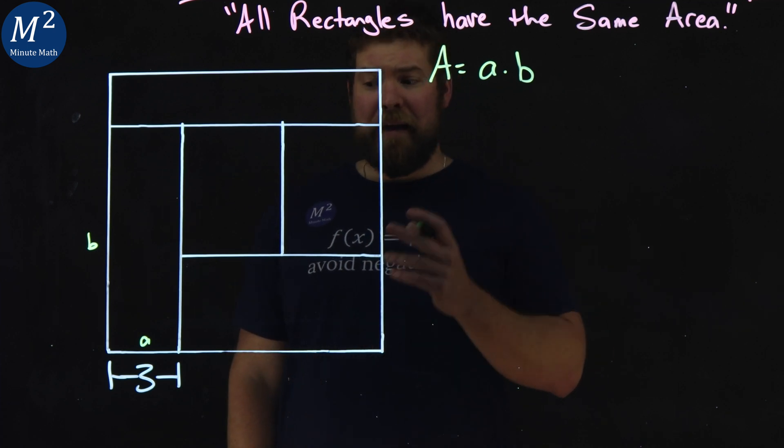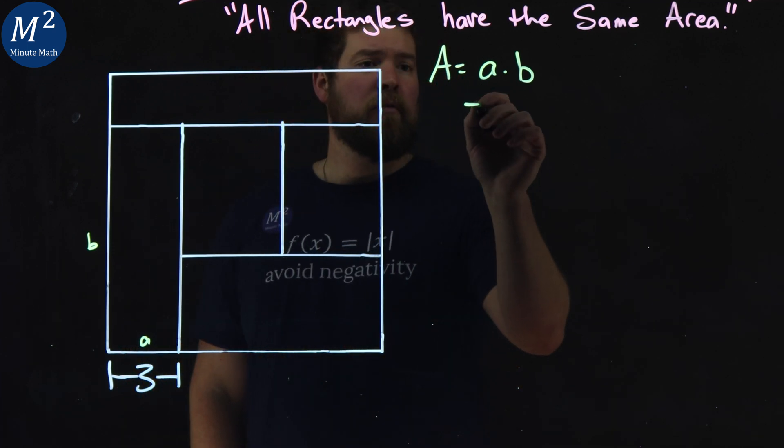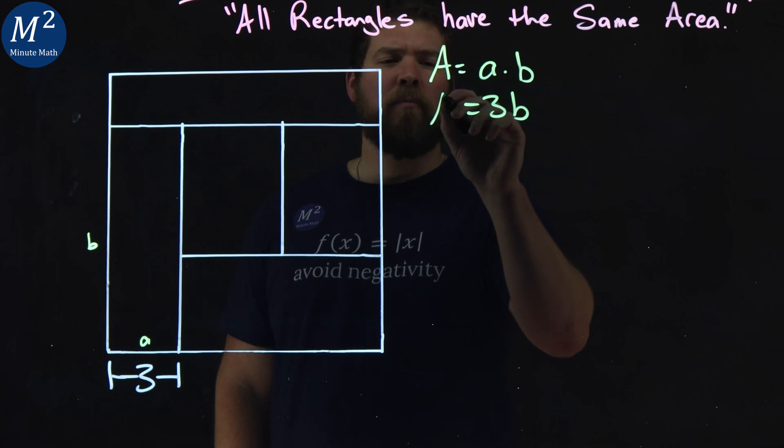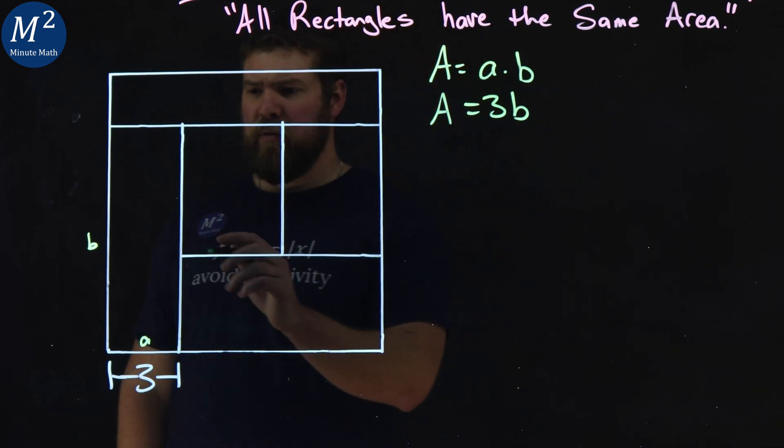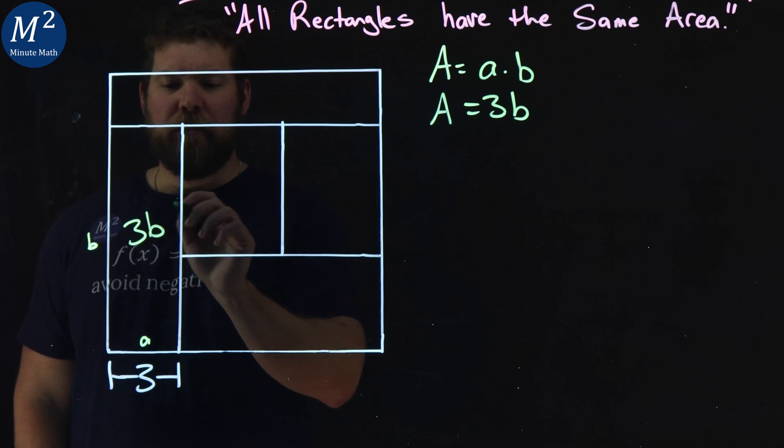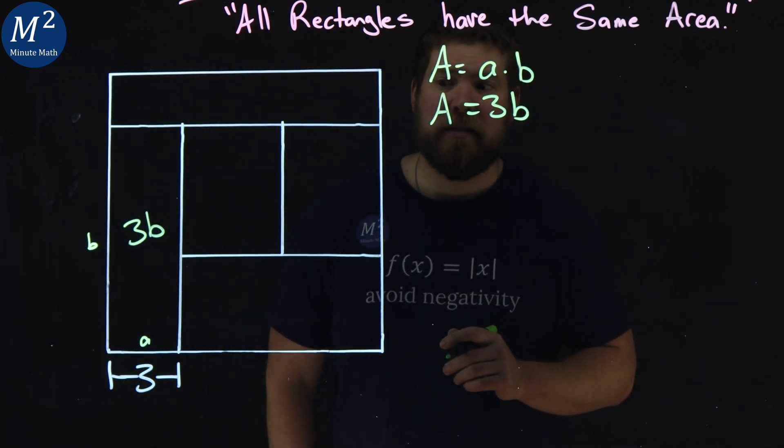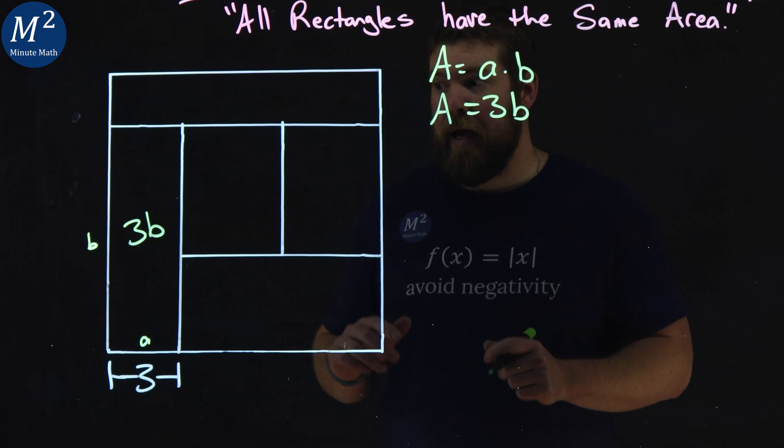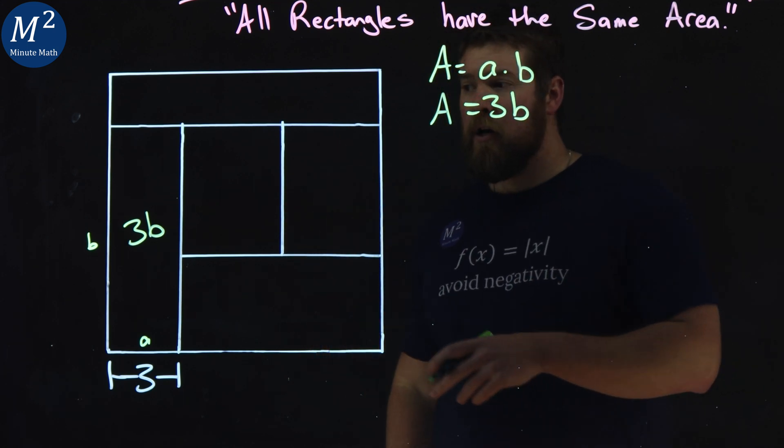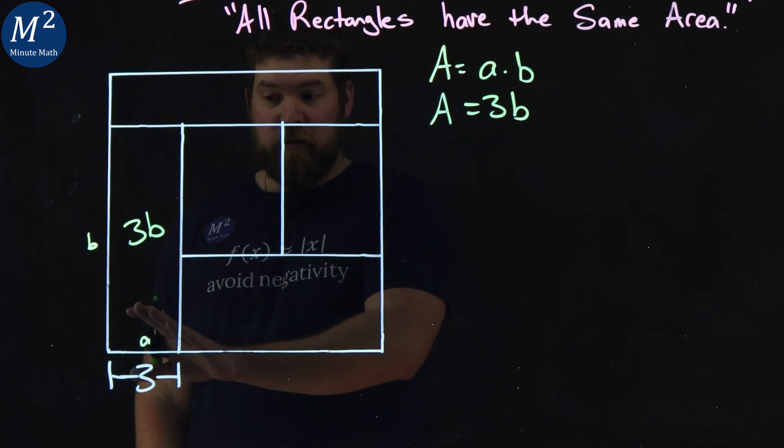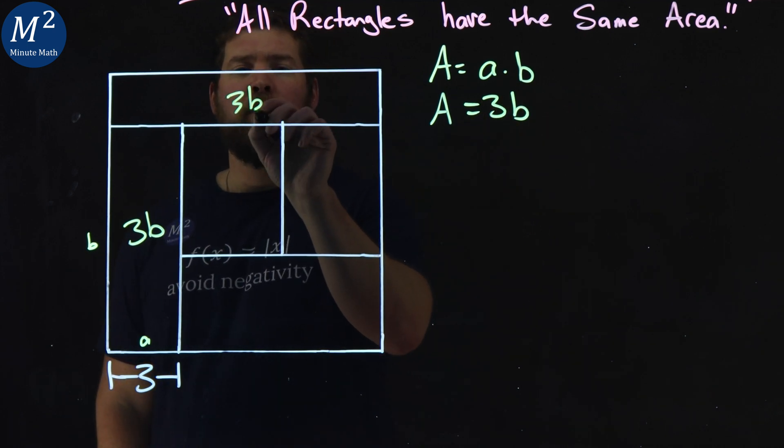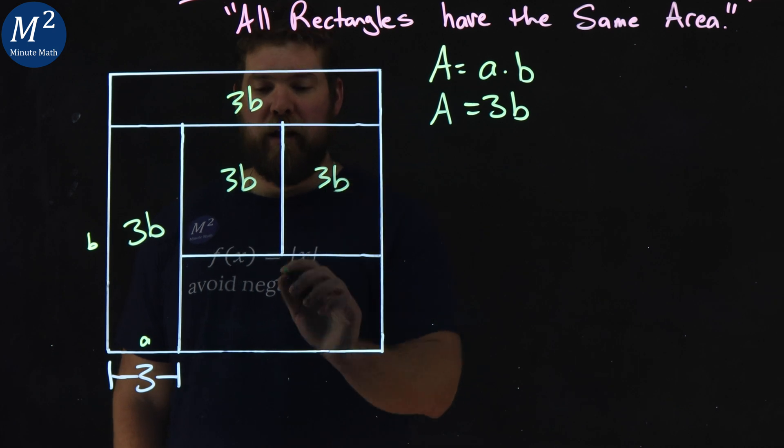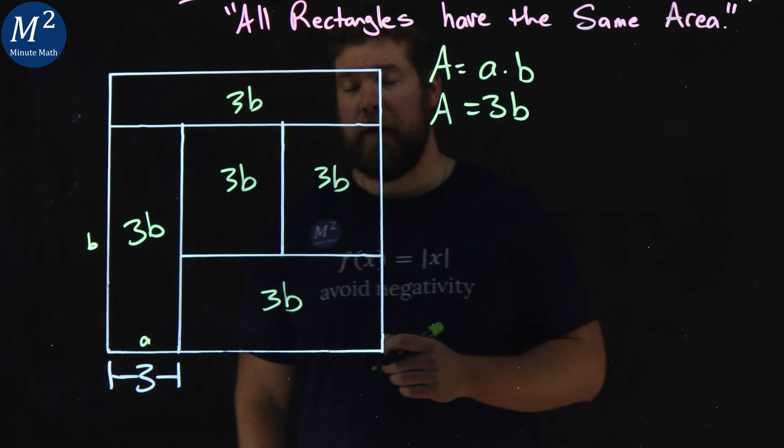I don't know what it is, but I know a is three. So if a is three, then I can really write the area of that rectangle to be three times b. Now, one thing they tell us here is that every rectangle has the same area. So if the area of whatever this first rectangle is, is 3b, all the other ones should be 3b as well, right here.